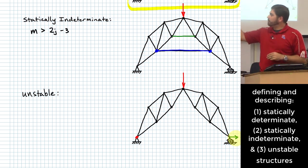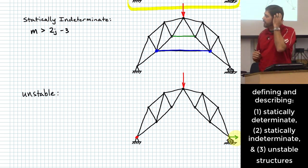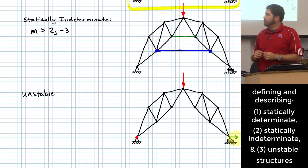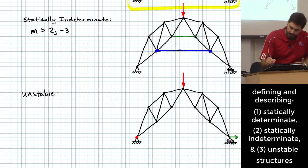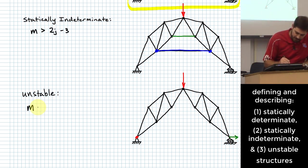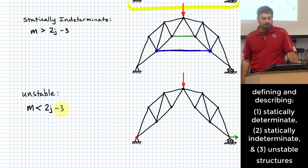Let's count up our equation — members versus joints. We now have fewer members than two times the number of joints minus three.